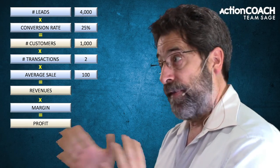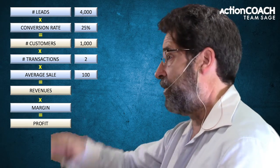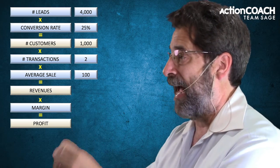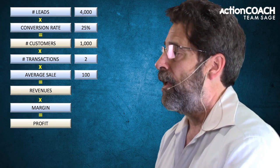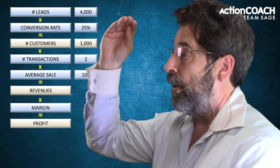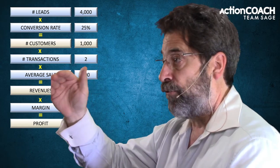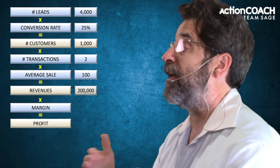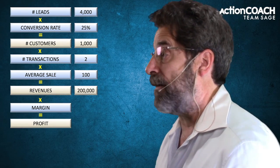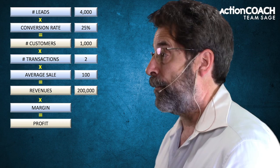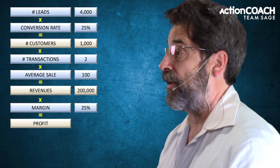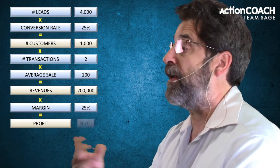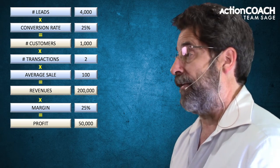Remember, that's an average — some might be a penny, some might be thousands of dollars, but the average is $100. So 1,000 customers times two transactions times $100 would mean $200,000 in revenues. Then if we have a 25% margin, that means we would have $50,000 in profit.